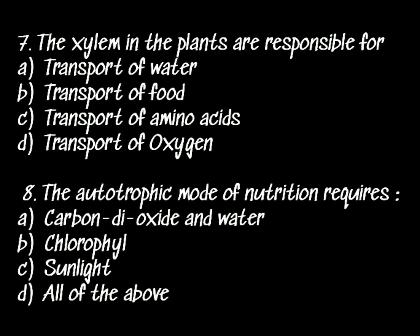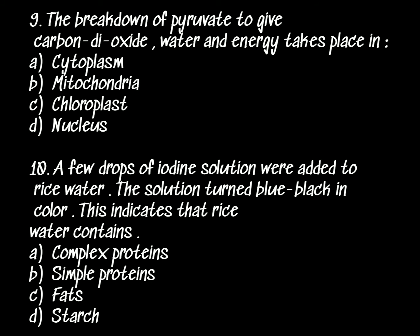Question 8: The autotrophic mode of nutrition requires: carbon dioxide and water, chlorophyll, sunlight, or all of the above. Question 9: The breakdown of pyruvate to give carbon dioxide, water, and energy takes place in: cytoplasm, mitochondria, chloroplast, or nucleus.